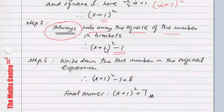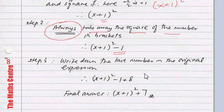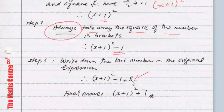There is one more step, and that involves writing down the last number in the original expression, which was plus 8. So the third step is to bring that plus 8 down and clean up the numbers. I have x plus 1 all squared, and minus 1 plus 8 gives plus 7. So the completed square form is x plus 1 squared plus 7, and we are done.